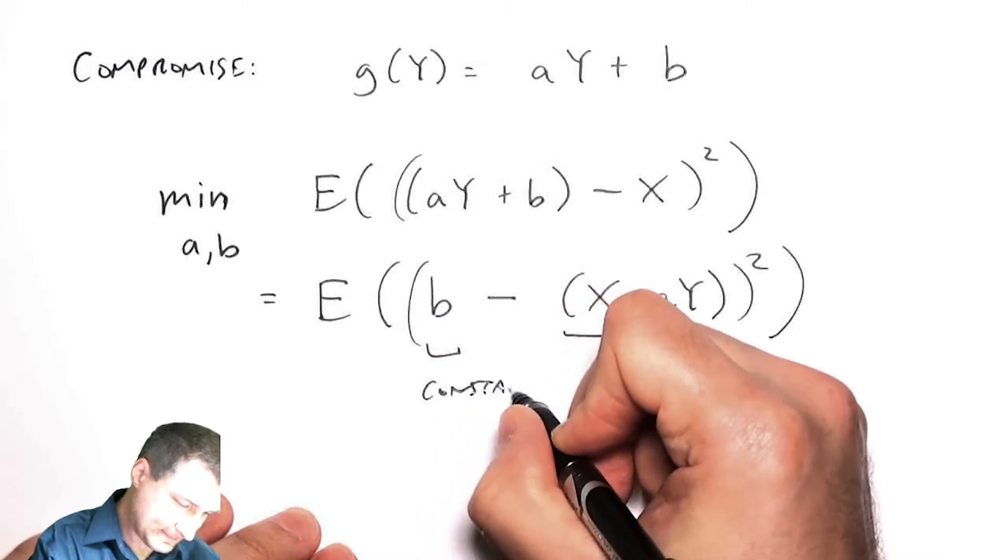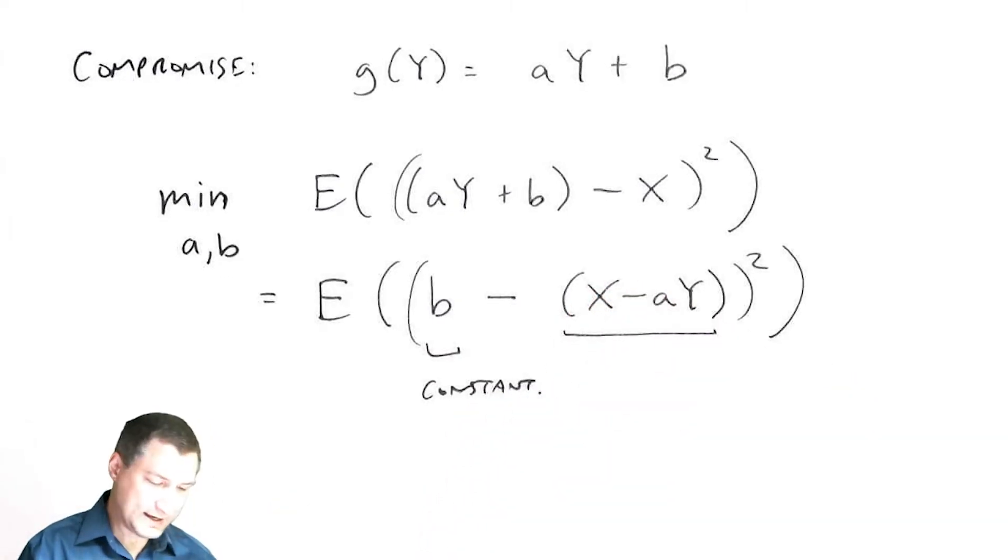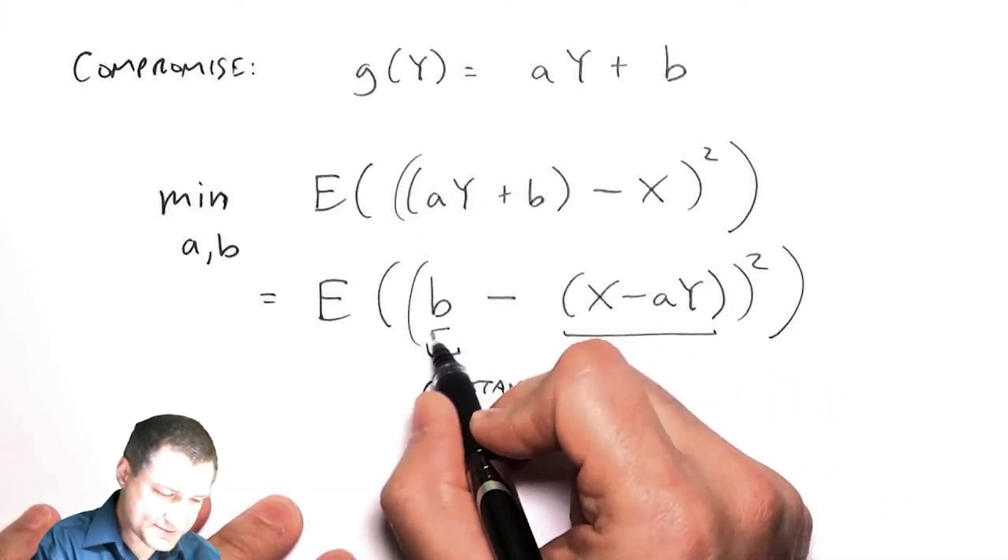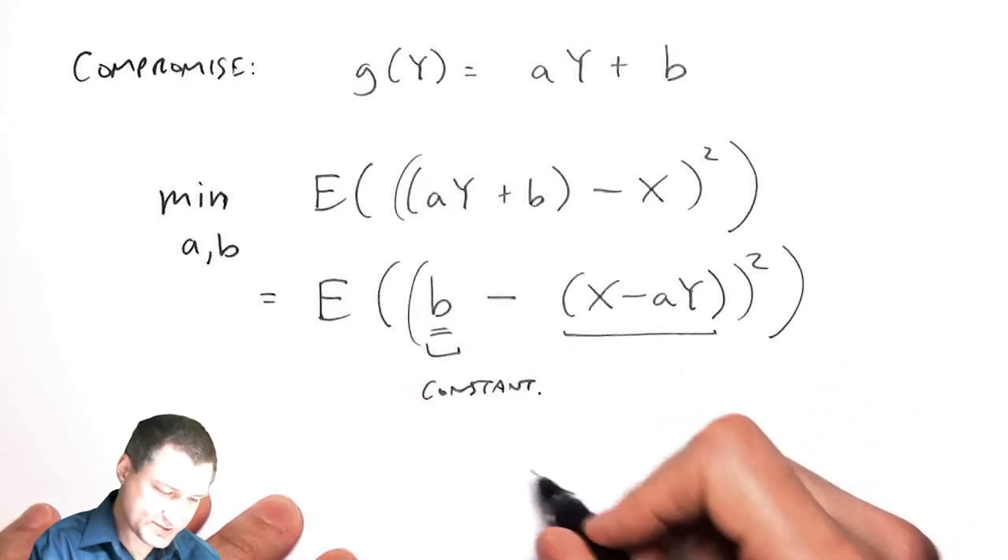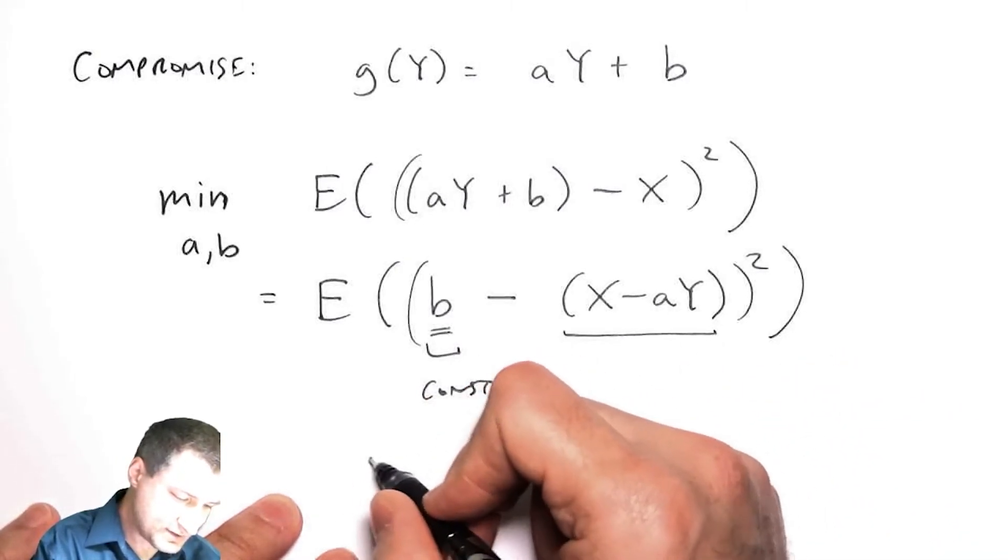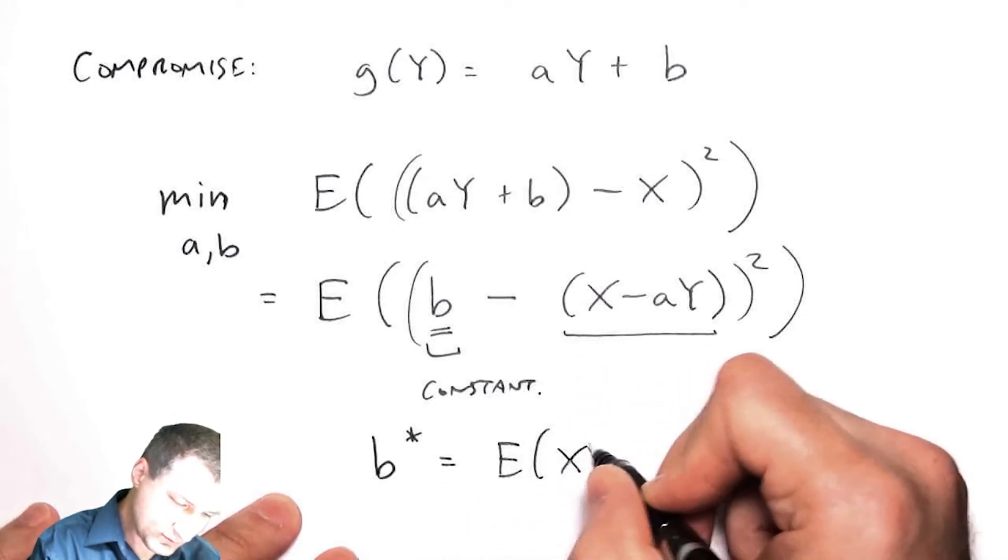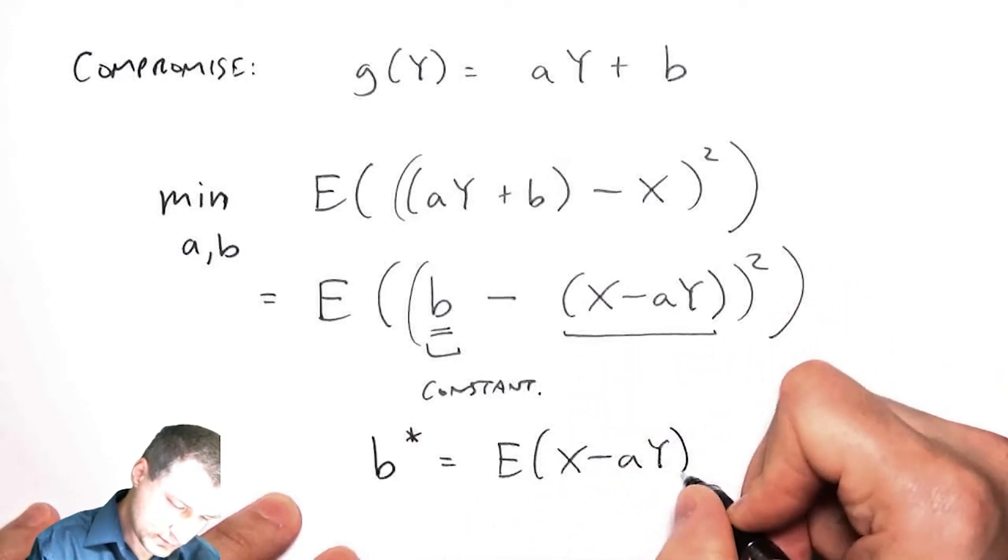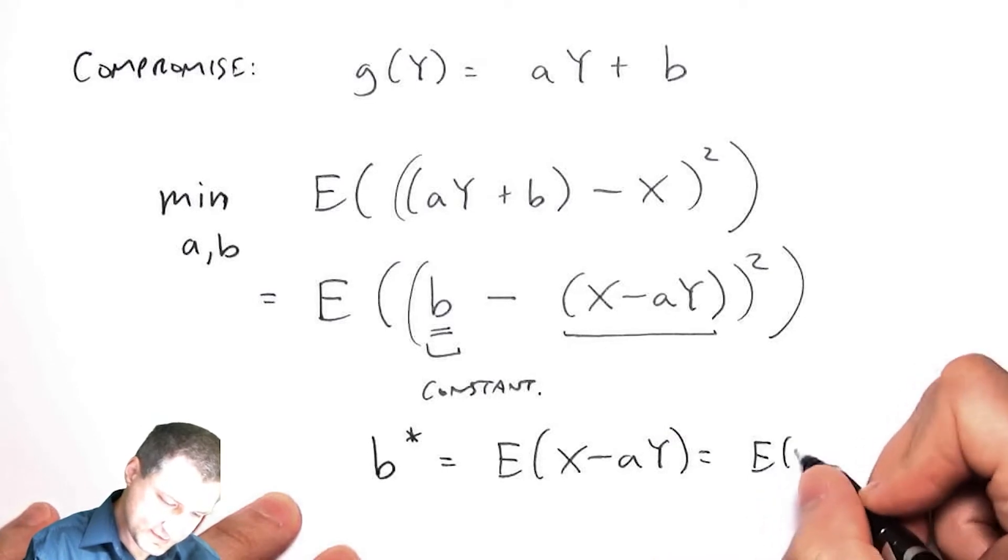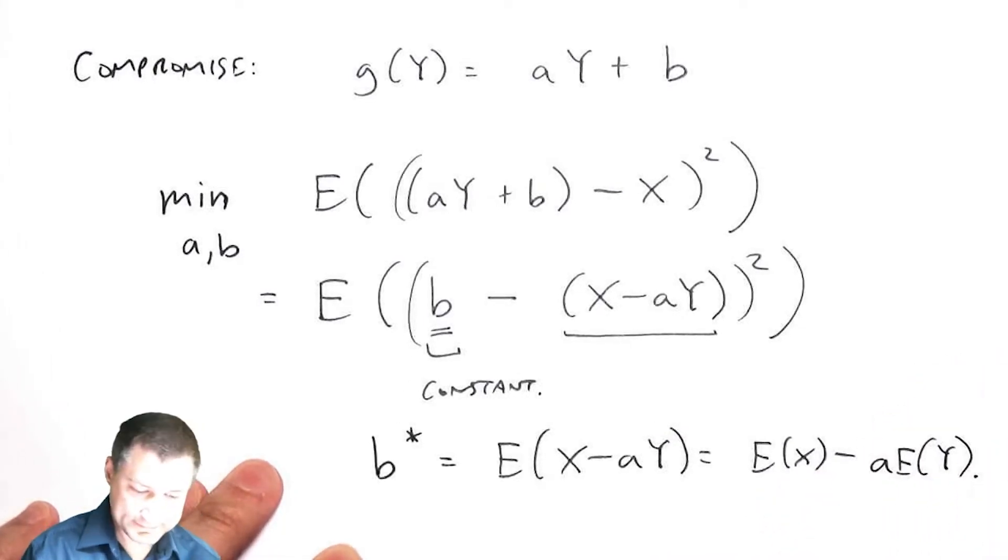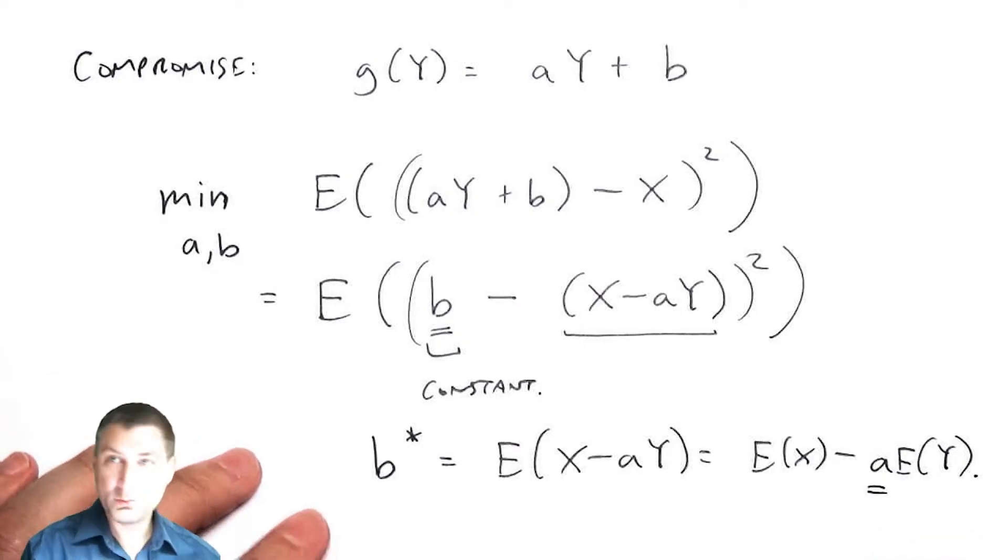The reason I wrote it like this is that this here is a random variable and this here is just a constant. So we already know from what I talked about in the last lesson that when I want to find the constant that does the best job, I should choose b being the expected value of whatever this thing is, which is going to be E(X) - a·E(Y).